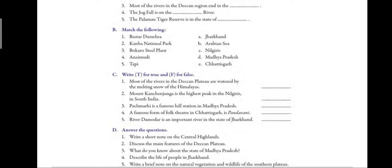Question two: discuss the main features of the Deccan Plateau. The Deccan Plateau lies south of the river Narmada. It is surrounded by the Eastern Ghats on the east and Western Ghats on the west. This region is rich in minerals. Most rivers are rain fed and flow from west to east into the Bay of Bengal. Black soil is also found in the Deccan Plateau.